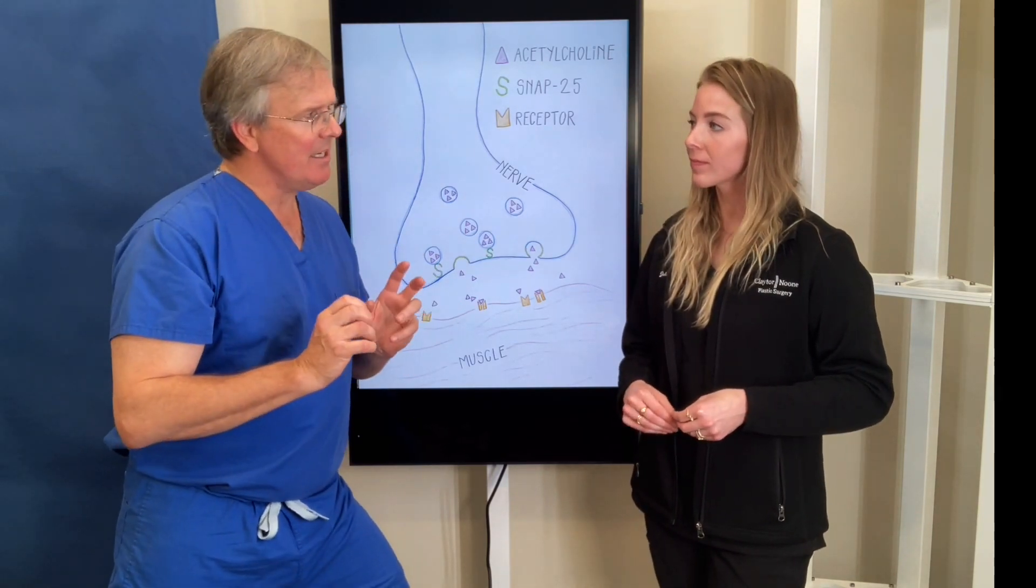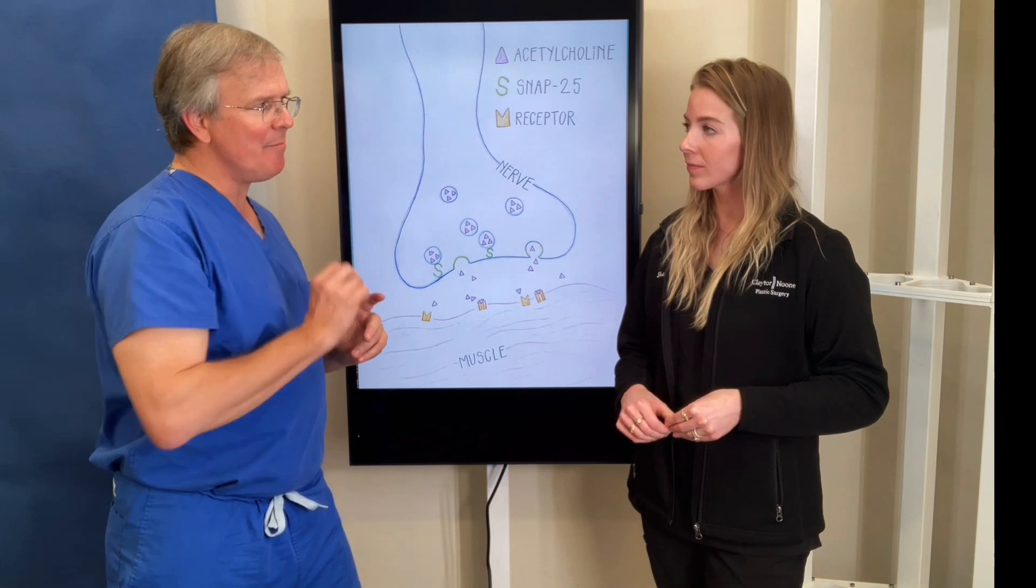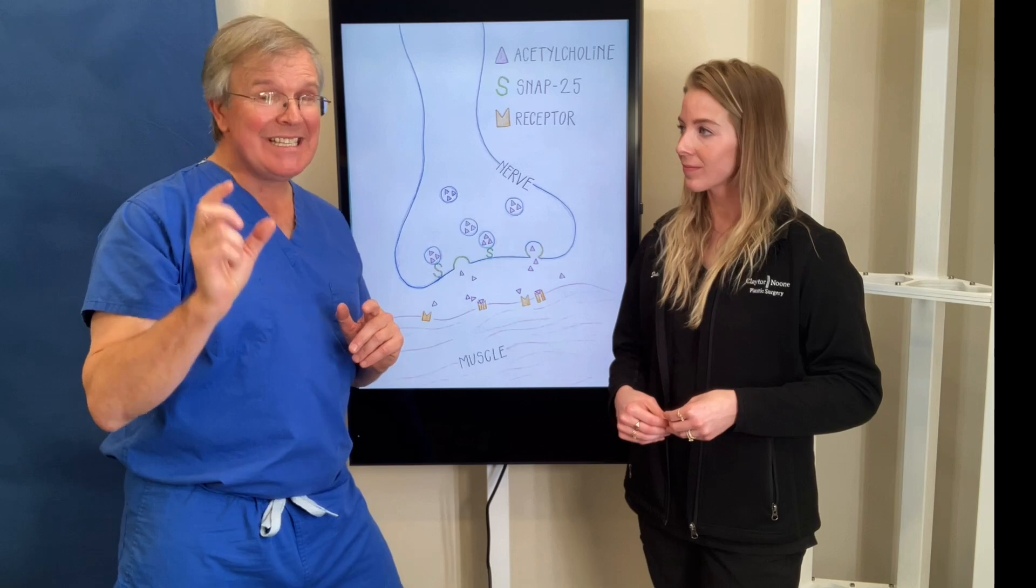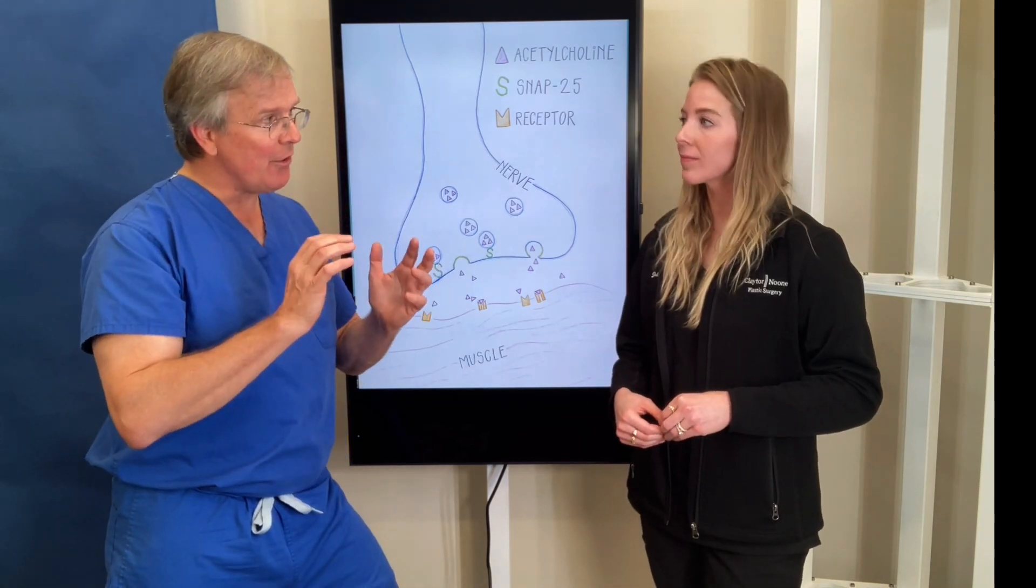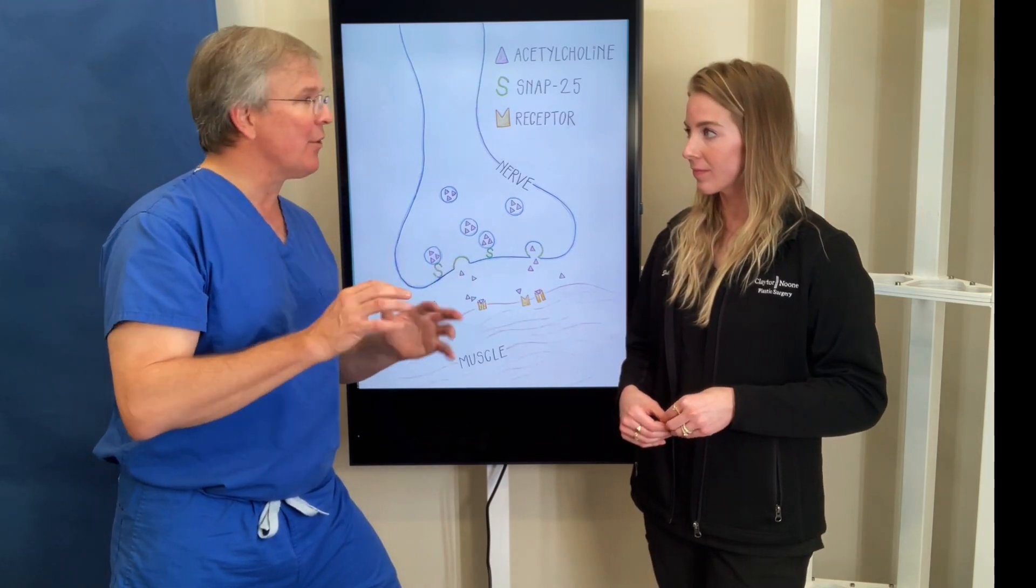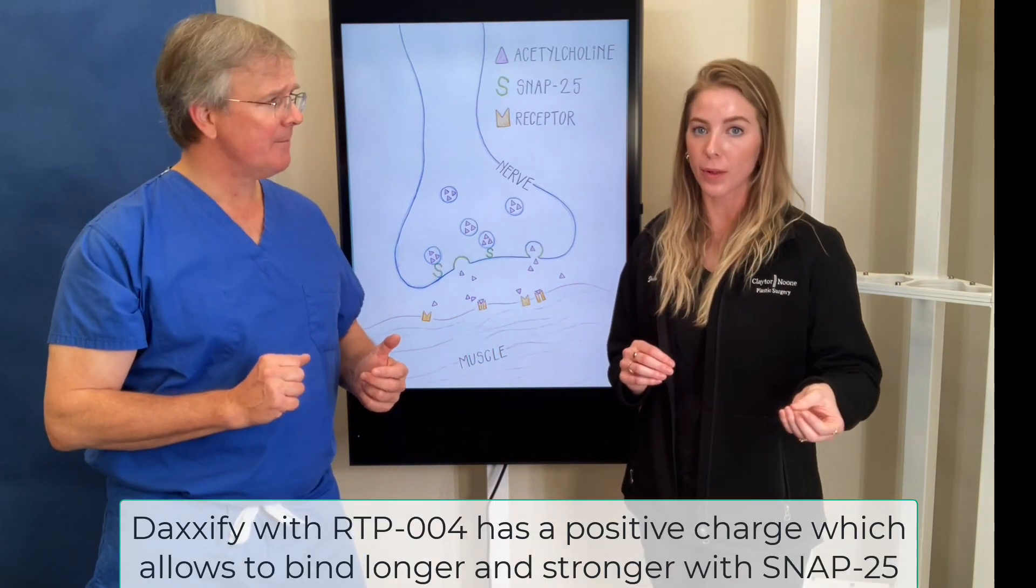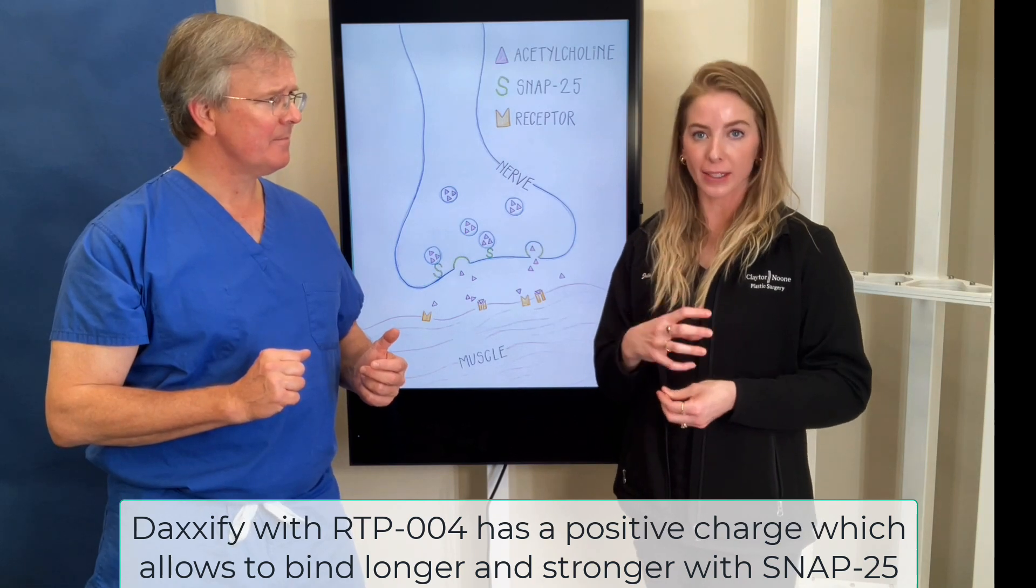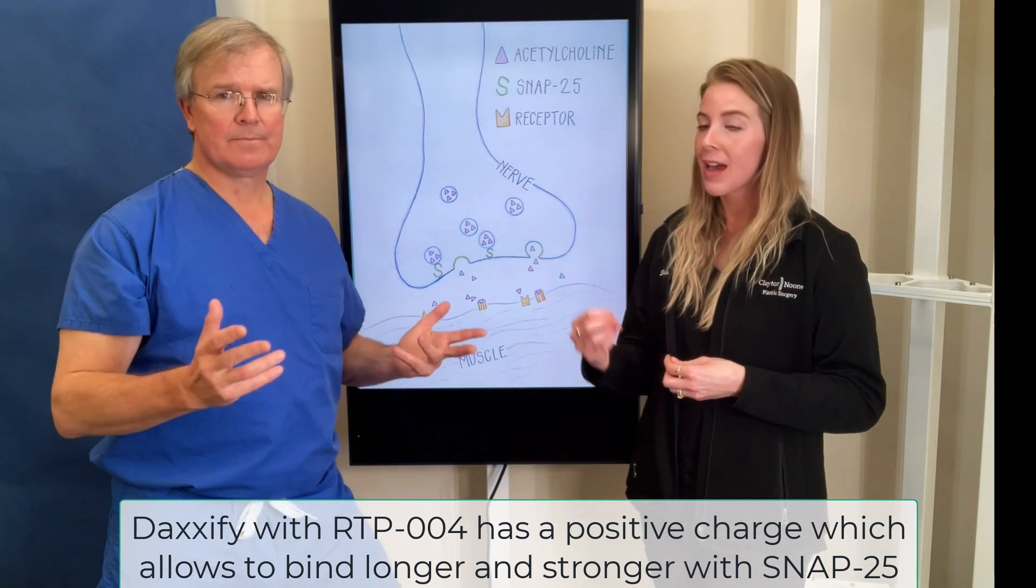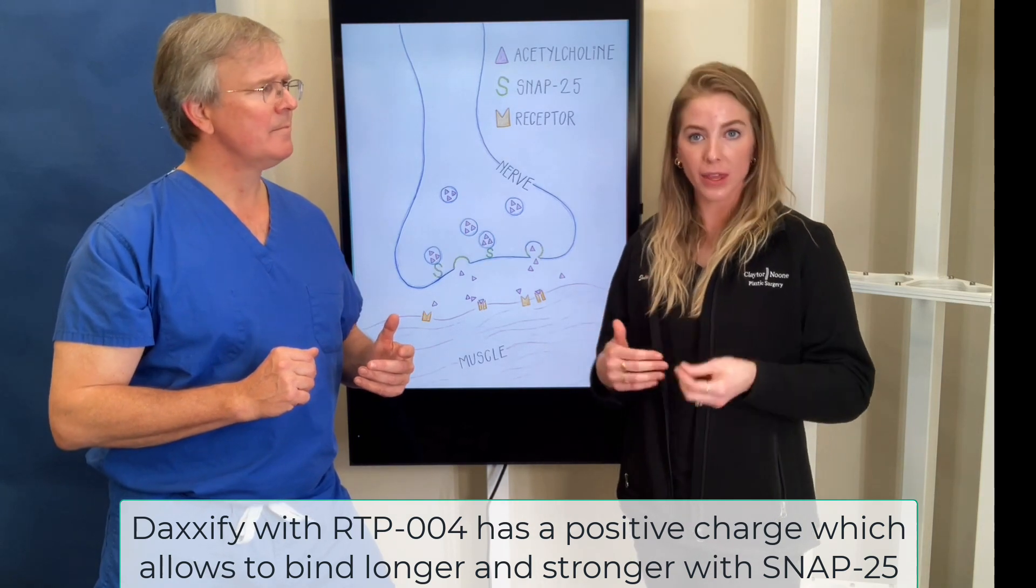My understanding is that this botulinum toxin has a negative charge on it and that the excipient peptide, this RTP-004, changes the electrical charge on the outside of the product. The super positively charged RTP-004 peptide, when attached to the daxy botulinum toxin A, makes the whole thing positively charged, which is attracted to a negative charge. It allows it to hang on to that neuronal surface, the nerve surface, longer, which in theory will allow that product to be internalized more, which will make it last longer.